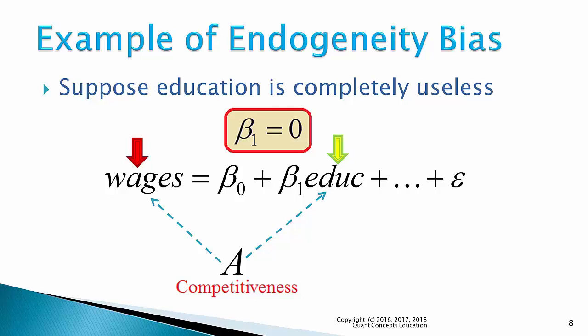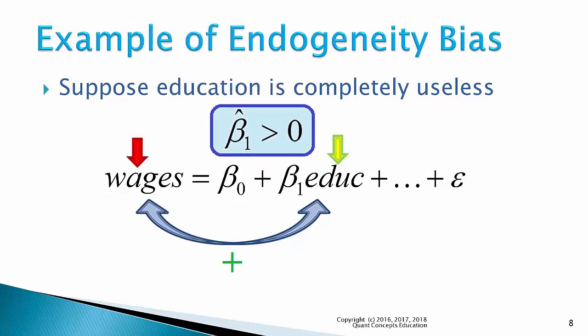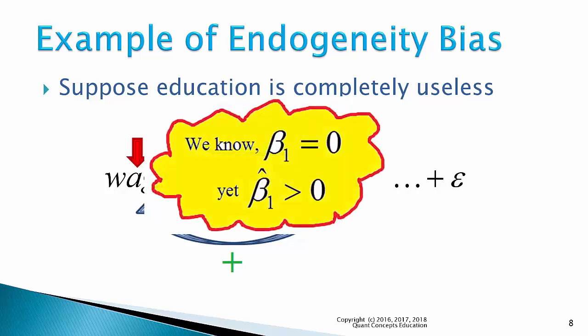So what do we observe? It seems as though wages and education have a positive relationship — as education was high, wages was also high, and vice versa. Their correlation here is positive. So if we were to estimate a regression using data, we would incorrectly produce a positive sample coefficient for education, because education moves positively with wages. So here is the bias: we know that beta1 should be zero, yet our sample beta1 estimate is positive. This is the endogeneity bias, and all this was caused by our X variable, education, being correlated with the error term.